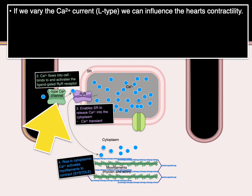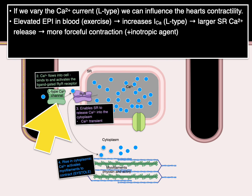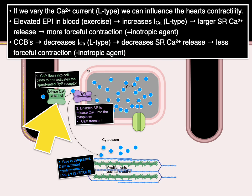If we vary the calcium current through the L-type calcium channel, we can influence the heart's contractility. Elevated epinephrine in the blood — for example, during exercise — will increase the calcium current through the L-type calcium channel. This results in a larger sarcoplasmic release of calcium and a more forceful contraction. That's why epinephrine is considered a positive inotropic agent. In contrast, calcium channel blockers decrease the calcium current, which decreases SR calcium release, resulting in a less forceful contraction — a negative inotropic effect.